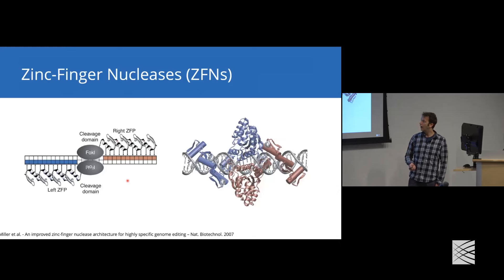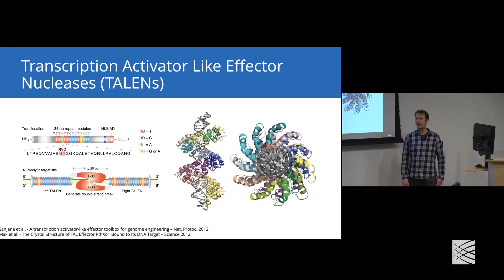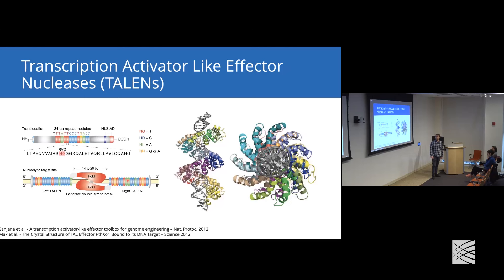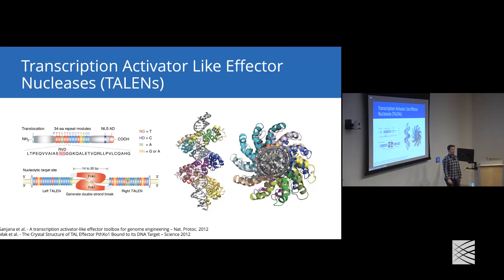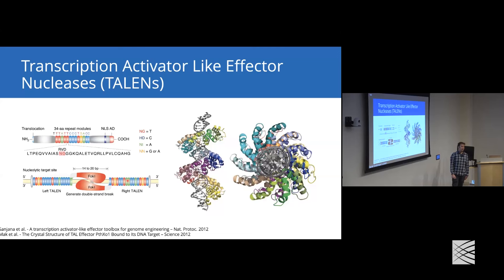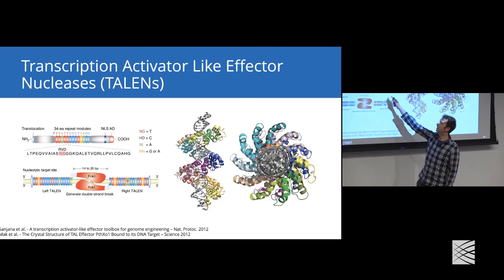Zinc fingers are great but pretty hard to design. People discovered a family of proteins from bacteria called transcription activator-like effectors or TALs, which are naturally occurring type 3 secretion system effector proteins - basically transcription factors that bacteria use to manipulate host cell physiology. You can see the typical domain architecture of a TAL with nuclear localization signals and an activation domain.